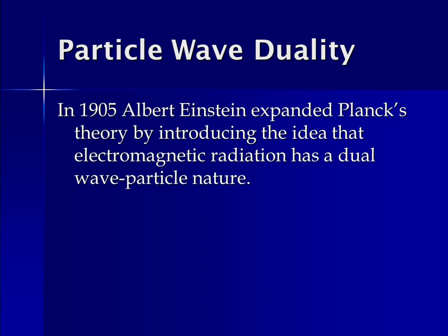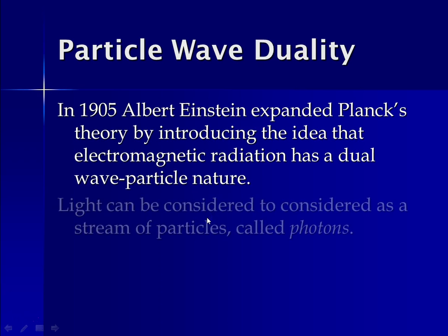So around this same time, Einstein expanded Planck's theory by introducing the idea that electromagnetic radiation has a dual wave particle nature. So remember, we first looked at waves and talked about wave properties. And then we said that Planck said that light really is made up of particles called these photons of energy. And then Albert Einstein expanded this and said, well, it turns out that both theories are correct, that electromagnetic radiation can act like a wave and it can act like a particle.